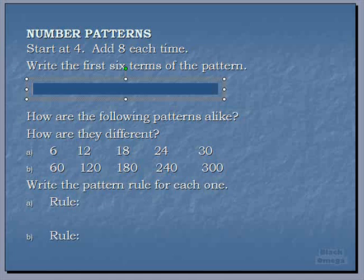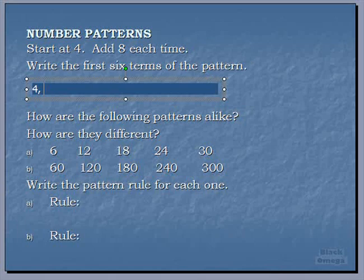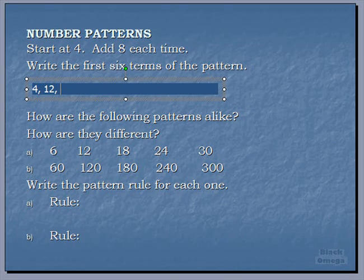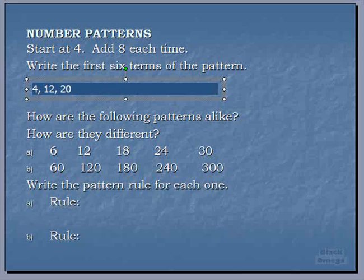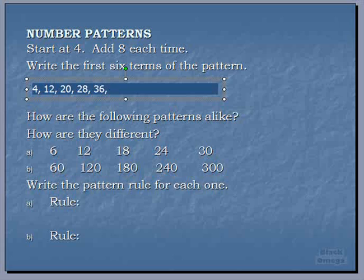So we start at 4. We're given that we add 8 each time, so if we add 8 to 4 we get 12. Add 8 each time boys and girls, so the next one would be 20, then we have 28.